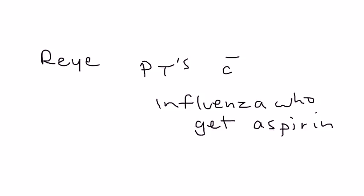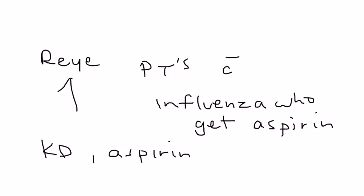You're stuck — you have a child with Kawasaki disease and you must give aspirin, but you don't want the child to get Reye syndrome. Fortunately, there is a solution: you give the child an influenza vaccine, which will hopefully prevent the child from developing Reye syndrome.